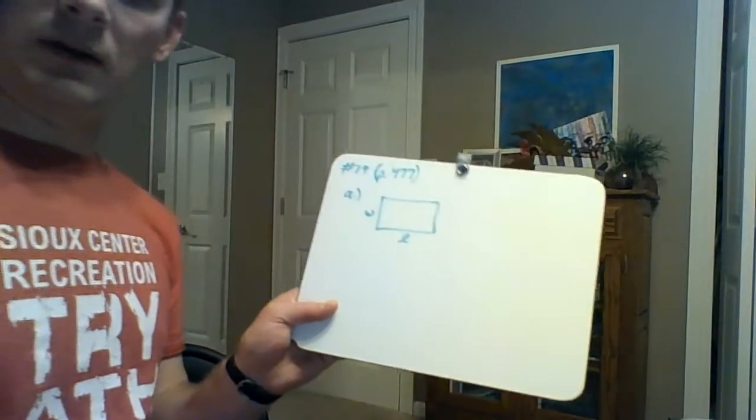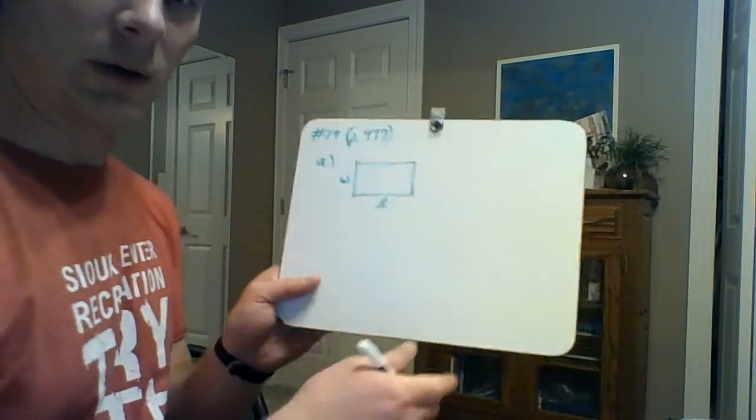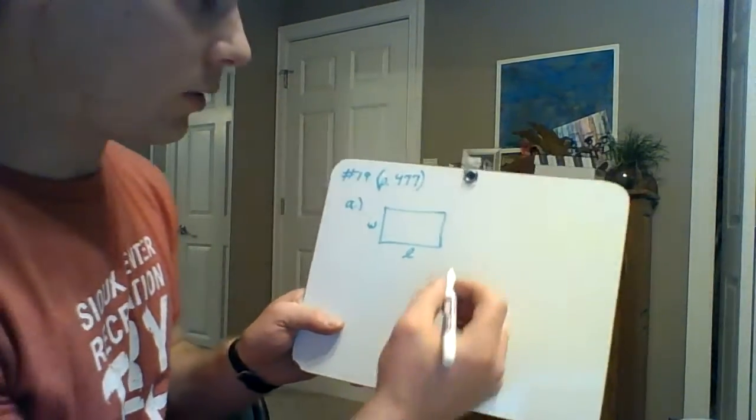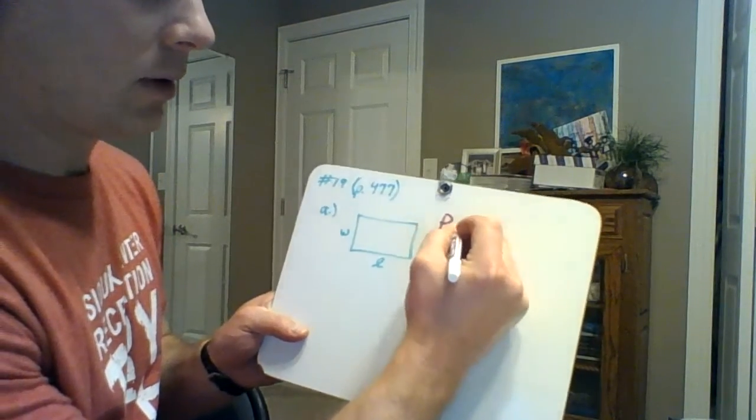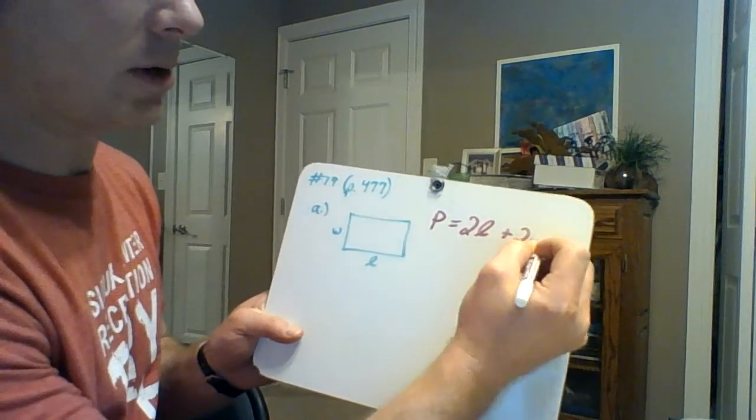Here's what you got to do. You got to think about this in two different equations. First of all, a perimeter equation. So once you have the drawing here, the perimeter would be 2L plus 2W.